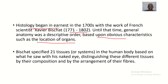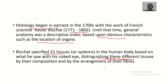General anatomy at the time was based on obvious characteristics such as the location of organs — basically just identifying where each organ sits. Bichat specified 21 tissues or systems in the human body based on what he observed with his naked eyes, not using a microscope, distinguishing tissues by the composition and arrangement of their fibers. From his work we now know simple squamous epithelium, columnar epithelium, pseudostratified columnar epithelium, and all the histology tissue types.